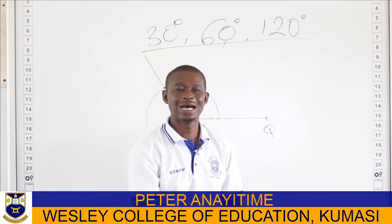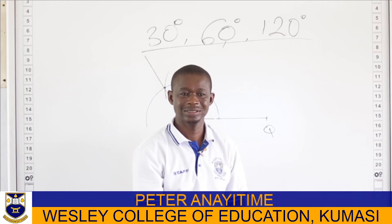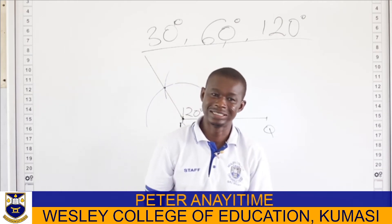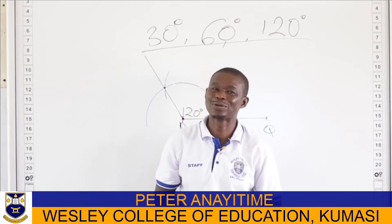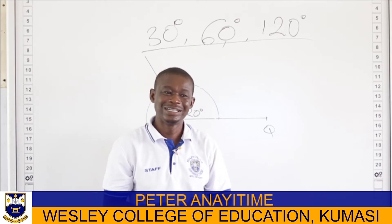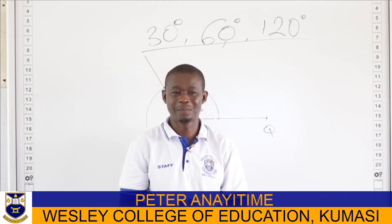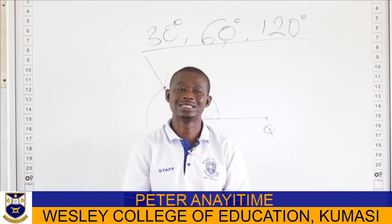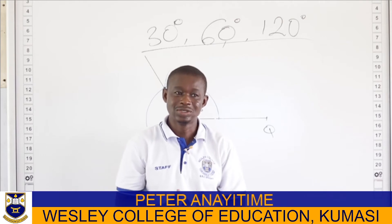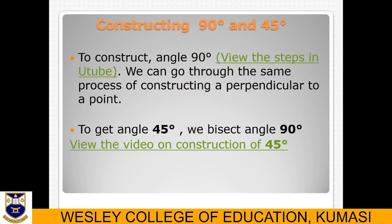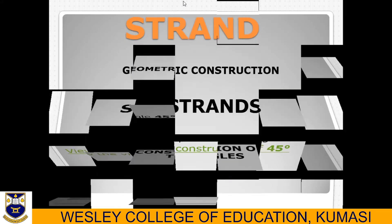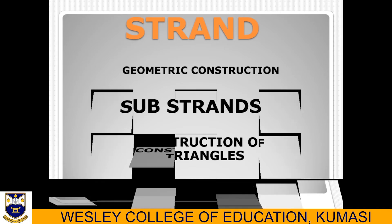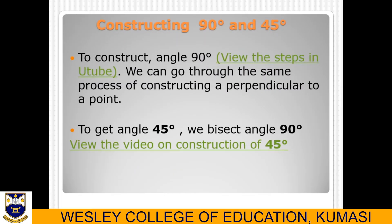Let's look at another angle — that is 90 degrees. If I know how to construct 90 degrees, constructing 45 degrees wouldn't be a problem because I know how to bisect angles. There are many ways of constructing 90 degrees, and we are going to look at it carefully.